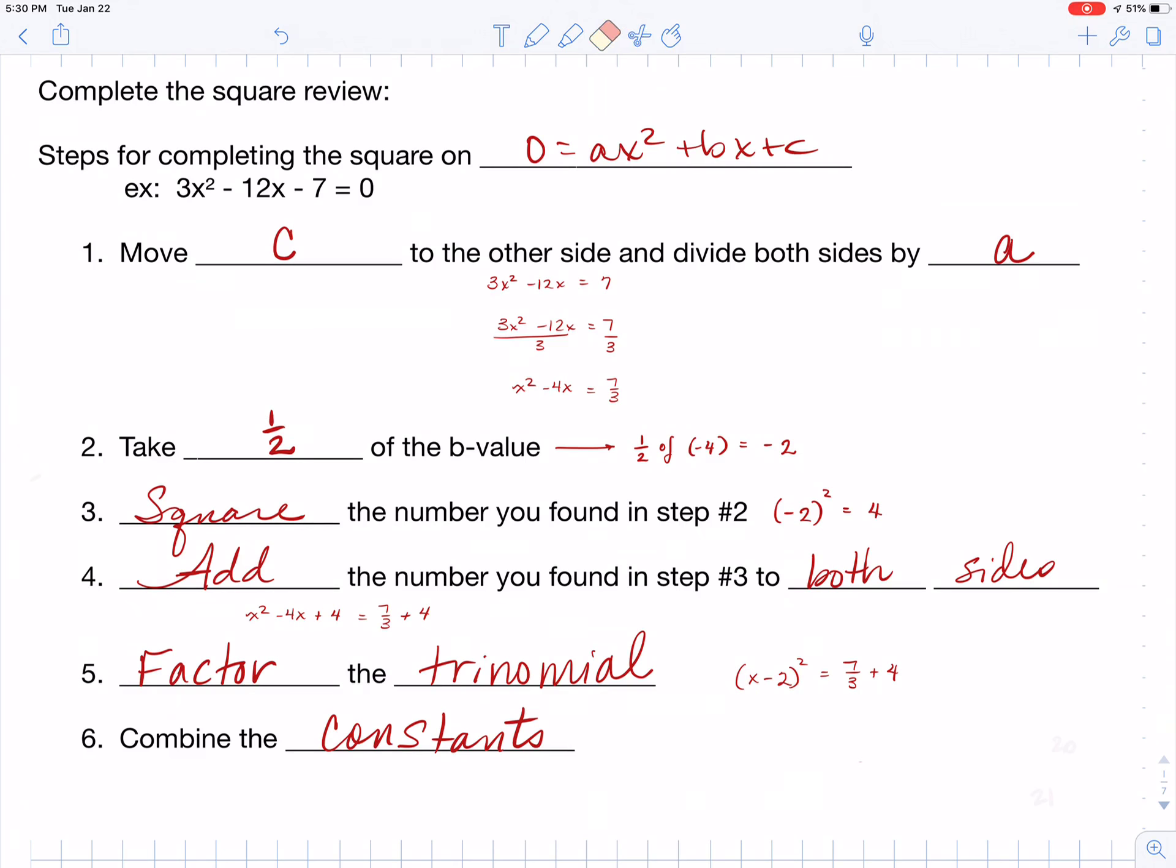And then the last step that you want to do is you want to combine your constants. So you need to combine your 7 thirds and your 4. Get a common denominator to do that. So I changed 4 into 12 thirds. 7 thirds plus 12 thirds gives me 19 thirds. And at this point, you have used completing the square on your quadratic equation.